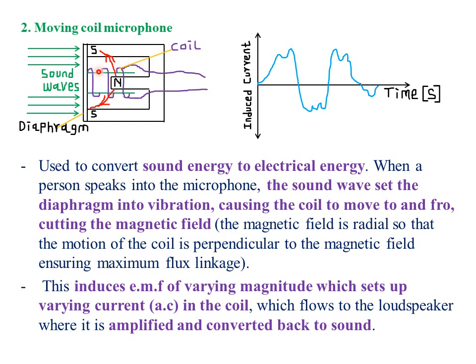It also has a coil which is usually attached to the diaphragm, such that as the diaphragm vibrates to and fro when it receives sound waves, it also causes the coil to vibrate to and fro within a magnetic field. Hence, some EMF will be induced in that particular coil. The moving coil microphone is used to convert sound energy to electrical energy, so that we can magnify that sound energy for it to be heard by a large crowd of people. When a person speaks into the microphone, their speech produces sound waves.